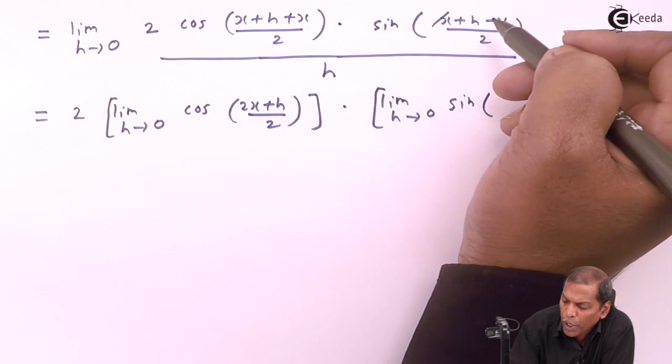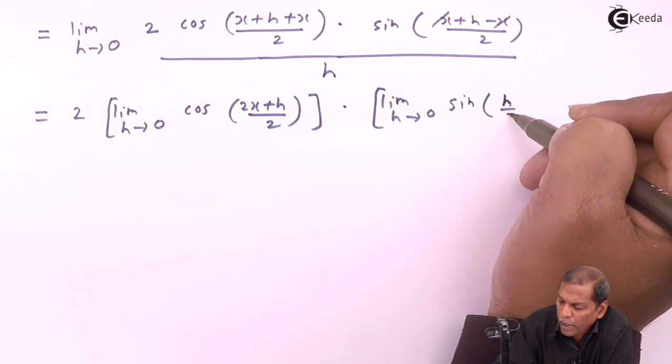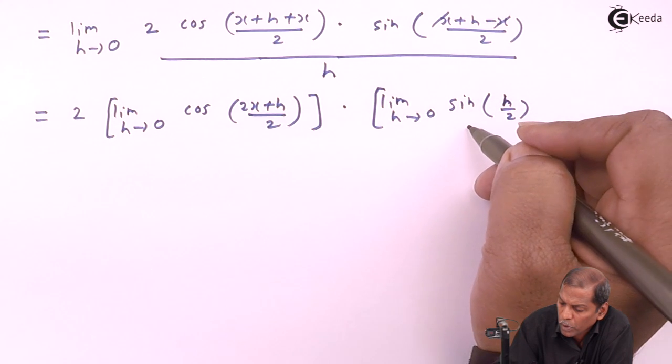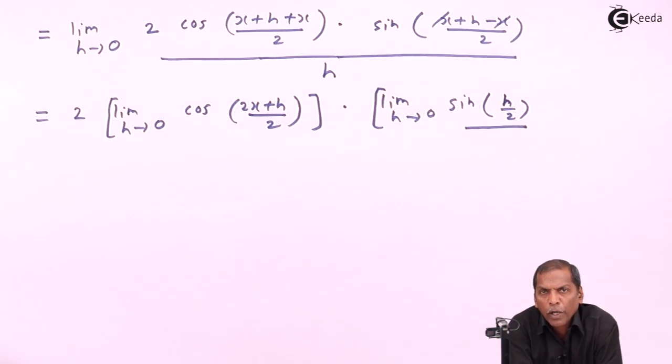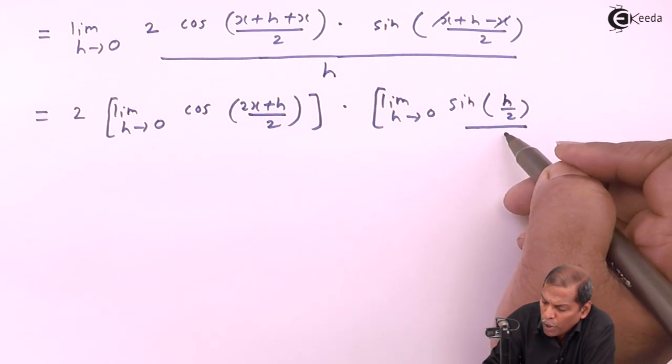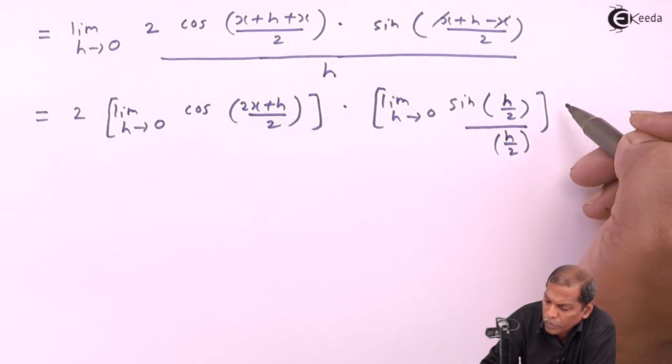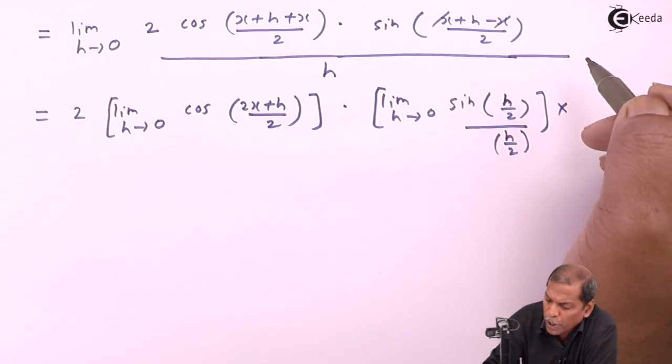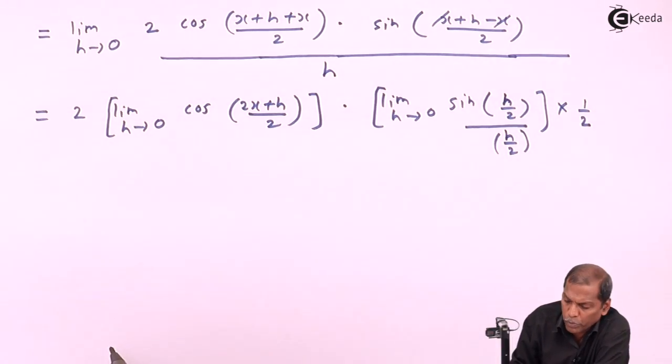Here x plus x minus x cancel, so we left with h by 2. Now in the denominator we have only h, and to get sine limit we must have h by 2 in the denominator. So that's why here to adjust this limit, we have to multiply this term by 1 by 2.